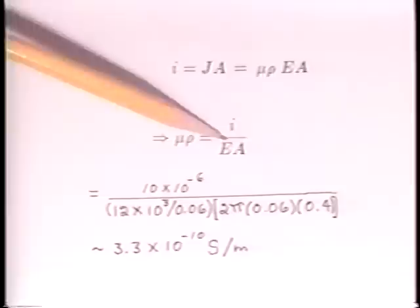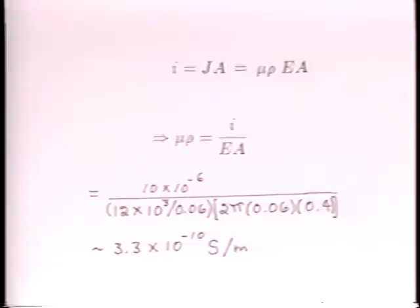The electric field in this coaxial geometry is not uniform, so if we take E to be the voltage divided by the spacing between the wire and the outer cylinder, it would seem to be a very crude approximation. However, the space charge due to the ions tends to make the field intensity uniform. So we take E as being approximately 12 kilovolts divided by 6 centimeters, about 2 times 10 to the fifth volts per meter.